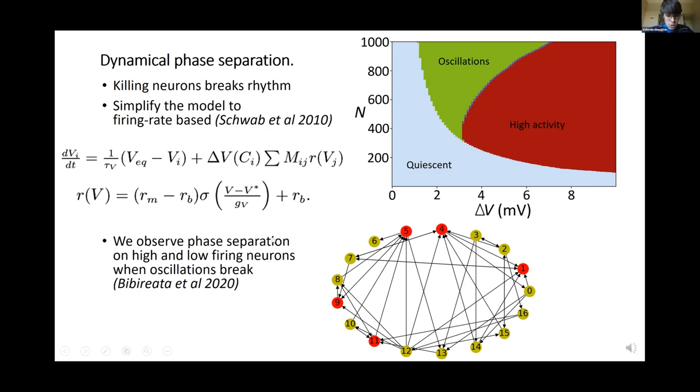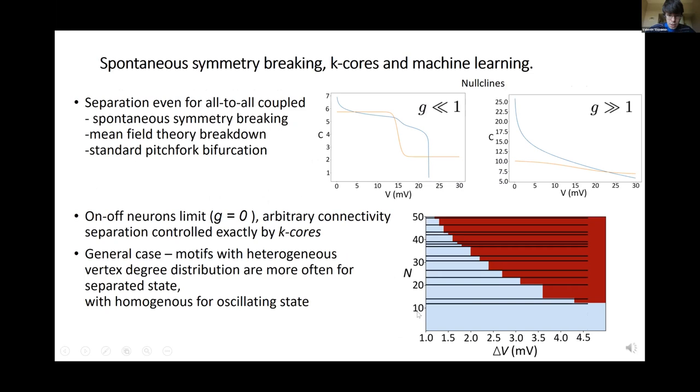We observe in this model that this termination of the oscillation phase happens in a very particular pattern. The oscillation terminates via the separation of the network onto constantly high firing neurons and constantly low firing neurons. We study this separation in more detail.